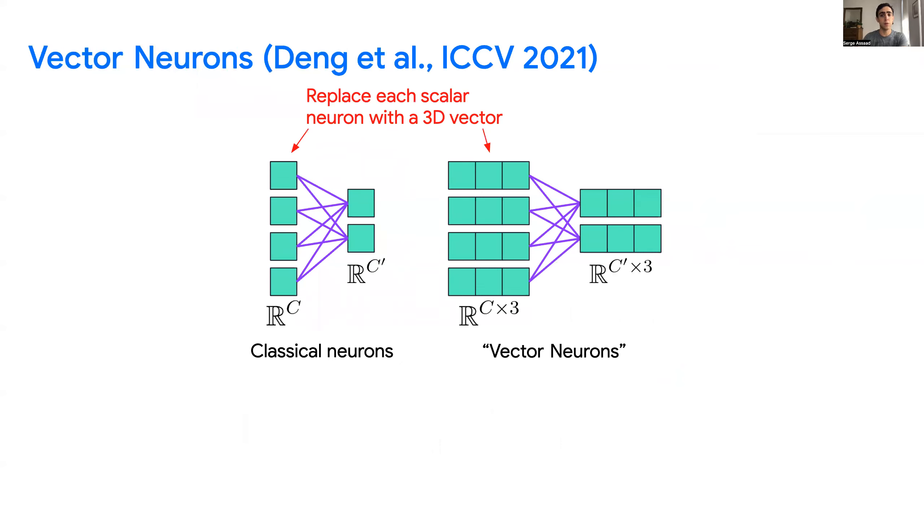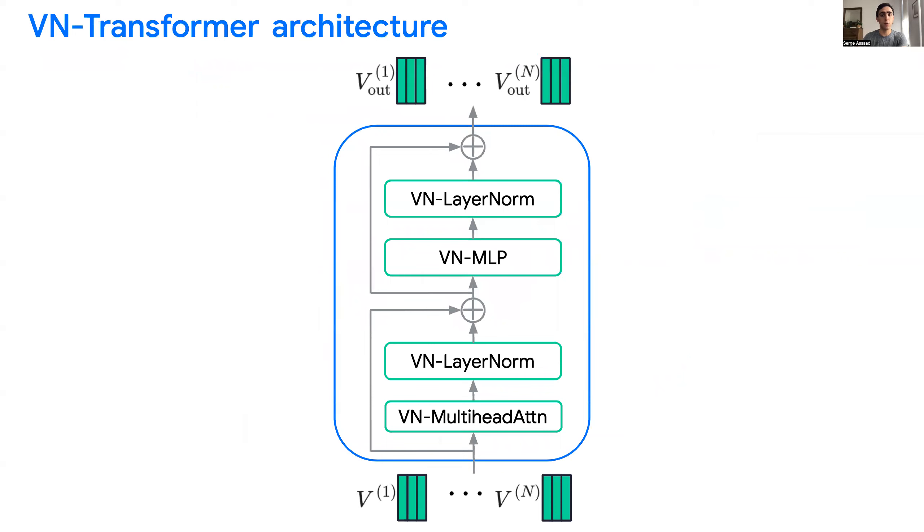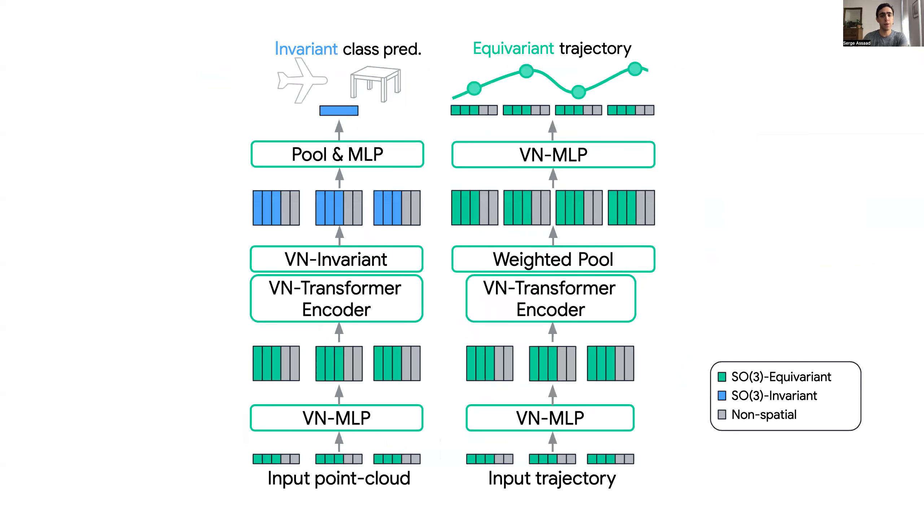Based on a paper from last year, whose idea is to replace scalar neurons with 3D vector neurons, we propose a rotation equivariant transformer architecture. We use the VN Transformer to perform invariant classification and equivariant trajectory prediction.